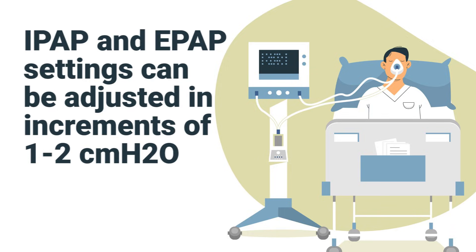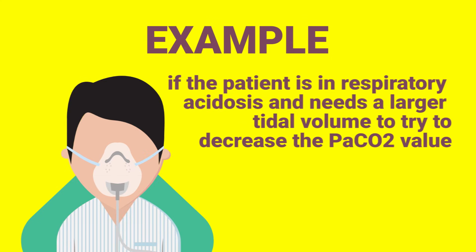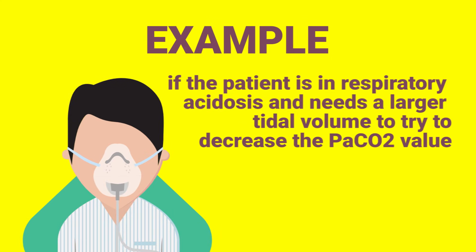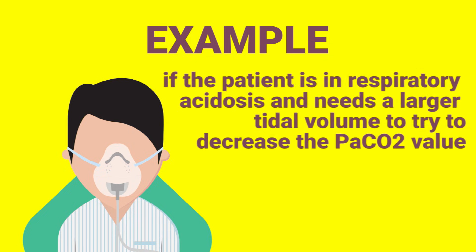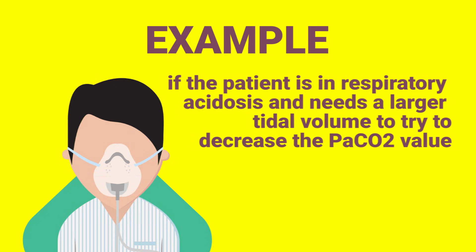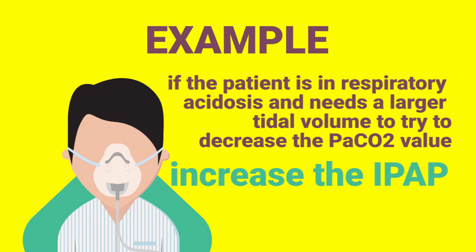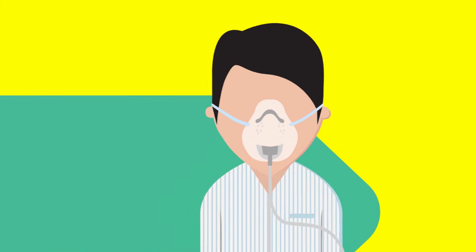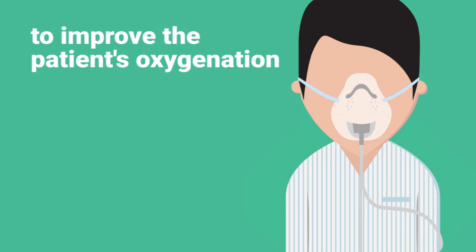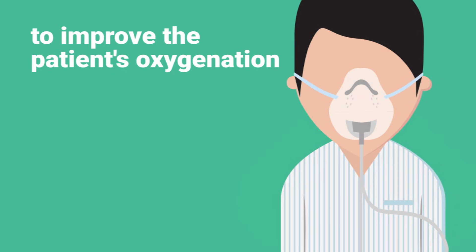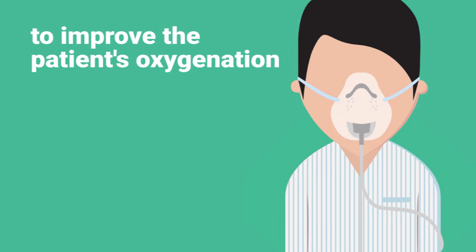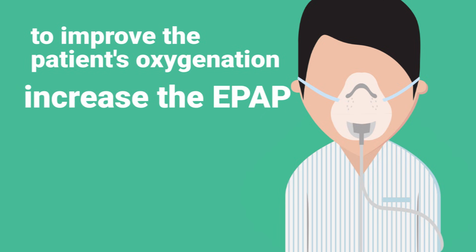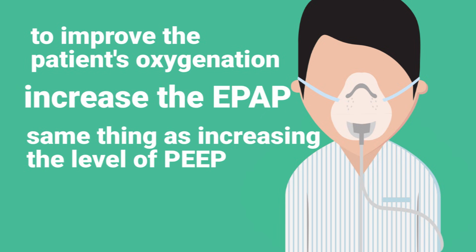Both the IPAP and EPAP settings can be adjusted in increments of 1 to 2 depending on the patient's needs. For example, if the patient is in respiratory acidosis and needs a larger tidal volume to decrease the PaCO2, you would increase the IPAP setting. To improve oxygenation, you can increase the FiO2, or another way is to increase the EPAP setting, which is essentially the same as increasing the level of PEEP.